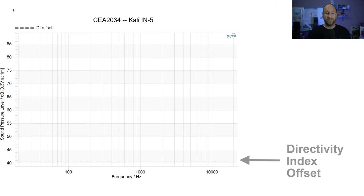The next set of graphics are based on directivity index. Before I talk about those, there's another line in the graphic called the directivity index offset. This is just a zero-dB reference line. If a speaker is perfectly omnidirectional — firing the same sound forward, backward, up, and down — it would be a flat zero-dB directivity index line.